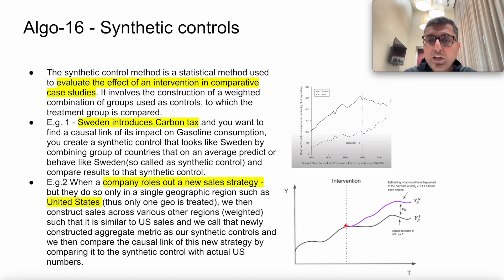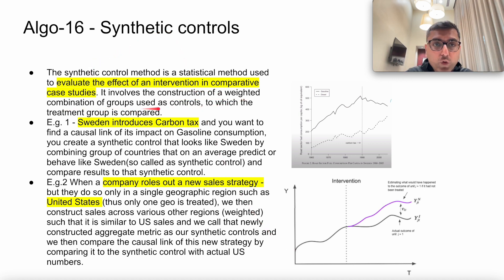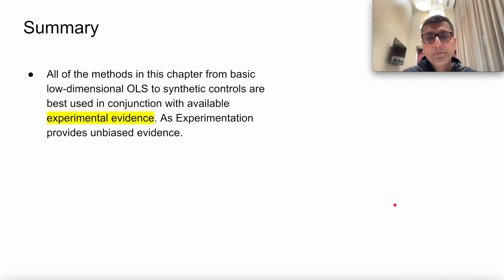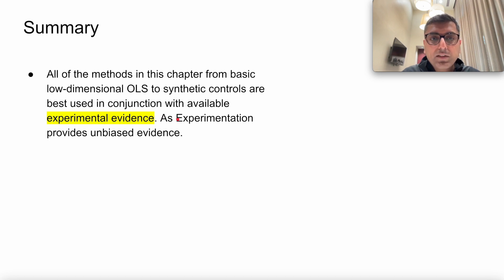Similarly, if you introduce a new sales strategy in the United States, you model all other countries' sales to create a weighted combination that looks like the United States before the intervention. Then you compare that synthetic control with the US actual numbers to find the impact of the new sales strategy. These are all techniques in which you can use past data to still build causal inference. But you can only use observational study in conjunction with experimental evidence you already have, because experimentation is the only way to provide unbiased evidence for causal link.